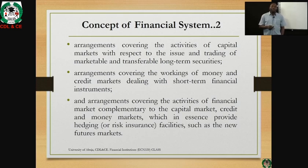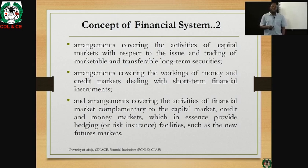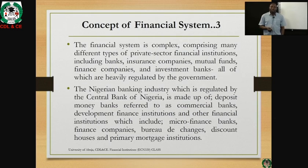Finally, the financial market complements the capital market, credit and money markets, which in essence provide hedging or risk insurance. Institutions that fall in this category include insurance and mortgage banks and other financial institutions that provide non-banking services. The financial system is also a complex comprising many different types of private financial institutions, including banks, insurance companies, mutual funds, finance companies, and investment banks, all of which are heavily regulated by government.